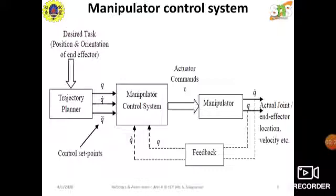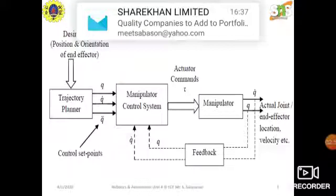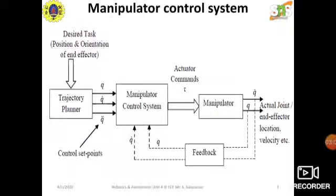This system is provided with a dotted line representing a feedback system. When there is feedback in the Manipulator Control System, we call it a closed loop control system. When this feedback system is not present, we call the same Manipulator Control System an open loop control system. If there is a feedback system, it is closed loop; if there is no feedback, it is open loop.